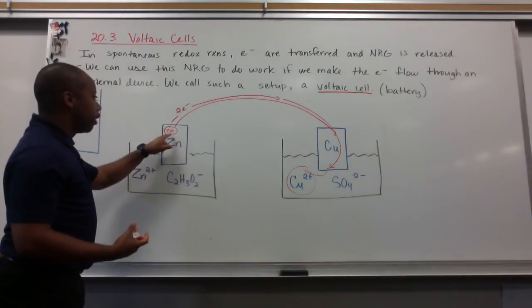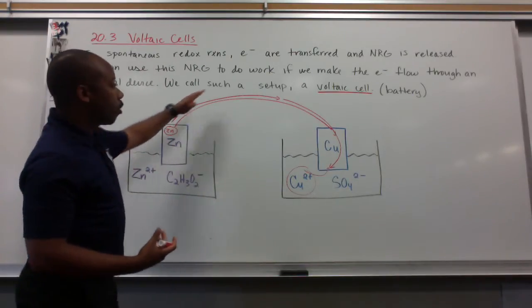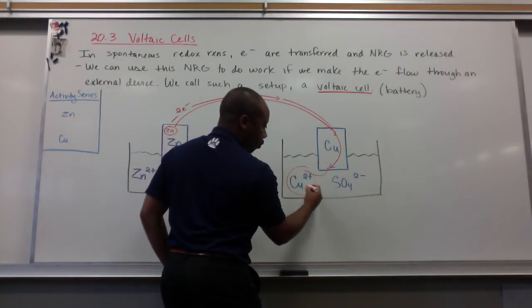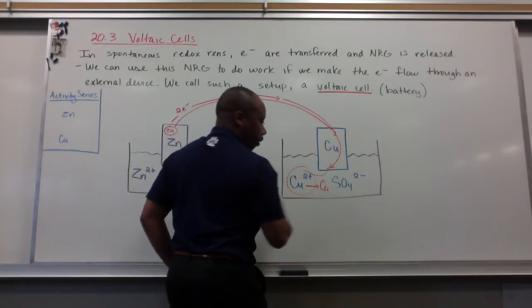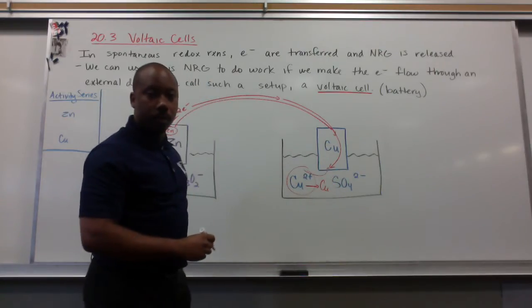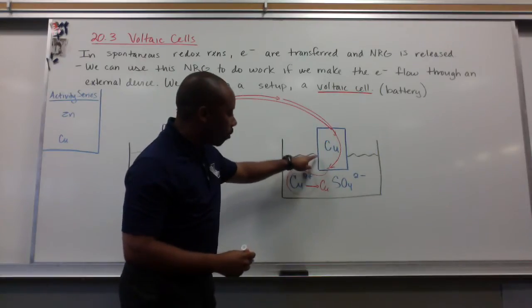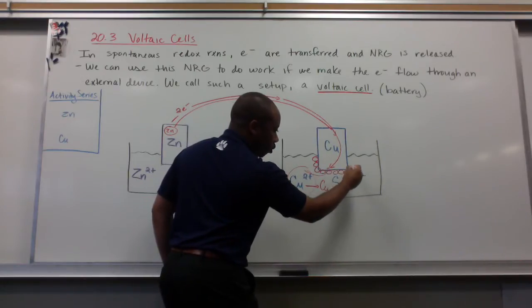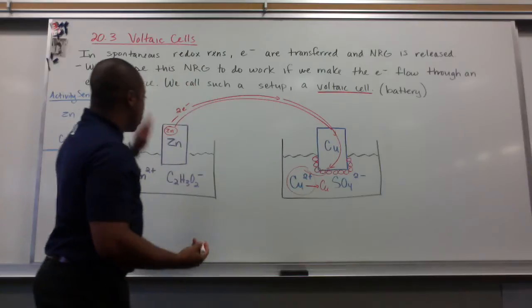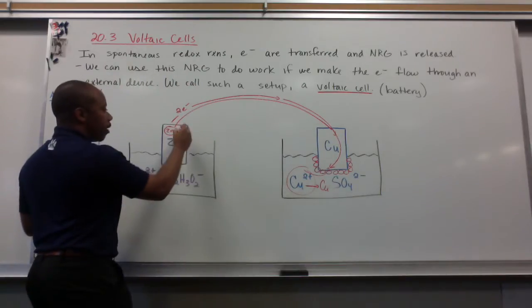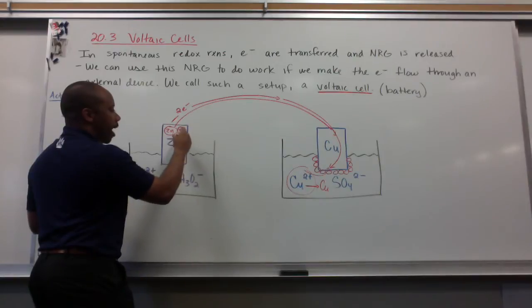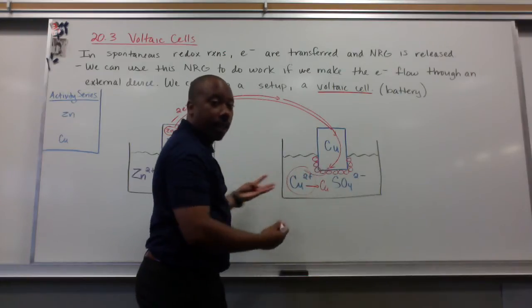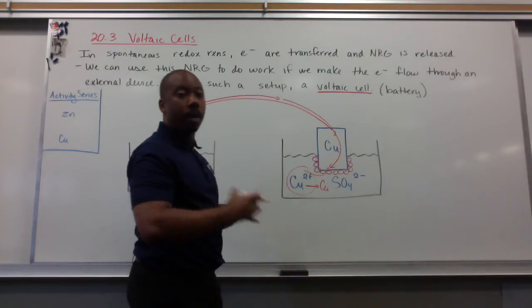A Copper 2 plus in solution is going to grab those electrons and then it now changes to pure Copper. So again, Zinc metal here sends two electrons over. This Copper 2 plus grabs those two electrons and this Copper 2 plus then becomes just pure Copper, Cu. And you see this accumulating on the bottom or the ends of this Copper bar here. So this happens over and over and over again. Zinc sends two electrons. So this Zinc atom, another Zinc atom, another Zinc atom sends over electrons. And Copper 2 plus ions that are abundant here in solution keep on grabbing those electrons and forming solid Copper.